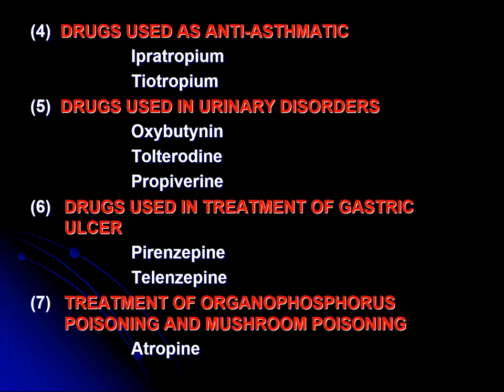Then those drugs which are used for gastric ulcer. Although H2 blockers and proton pump inhibitors are the drug of choice, in some cases we can use these highly selective anti-cholinergic drugs like pirenzepine and telenzepine, which are highly selective for muscarinic M1 receptors.